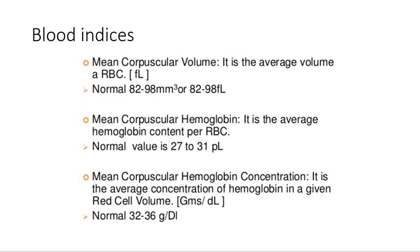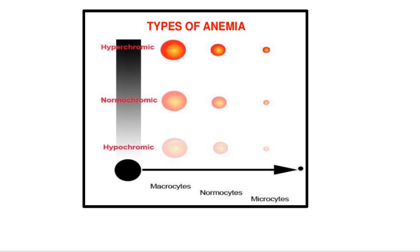MCHC is mean corpuscular hemoglobin concentration — the average concentration of hemoglobin in total packed cell volume. That is the difference between MCH and MCHC. Now anemia can be classified based on these indices. As you can see in the image, there is hyperchromic, normochromic, and hypochromic. 'Chrome' means color. Hyperchromic means hemoglobin concentration is more than normal; normochromic is normal; and MCHC value less than normal is hypochromic.